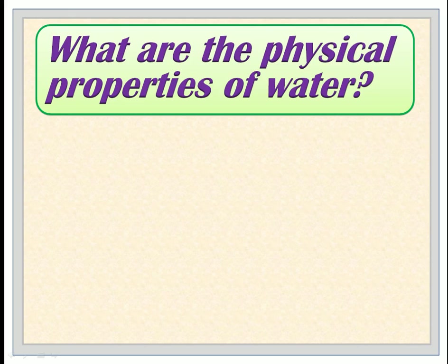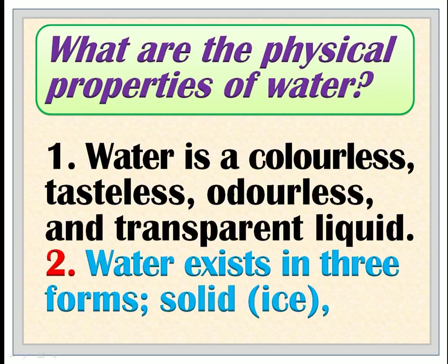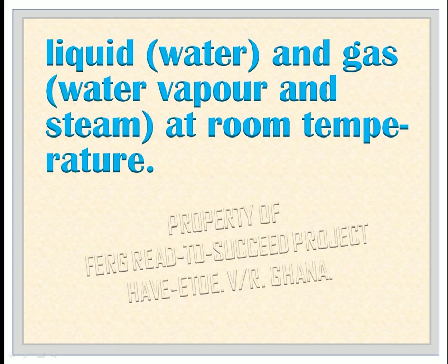What are the physical properties of water? 1. Water is a colorless, tasteless, odorless, and transparent liquid. 2. Water exists in three forms: solid (ice), liquid (water), and gas (water vapor and steam), at room temperature.